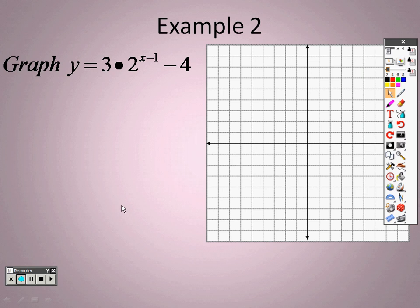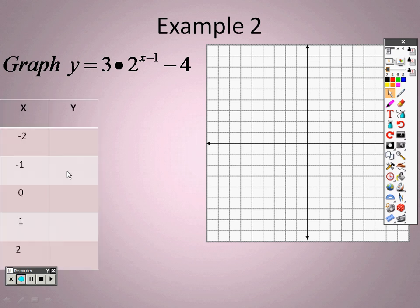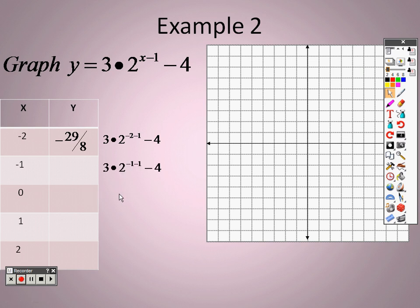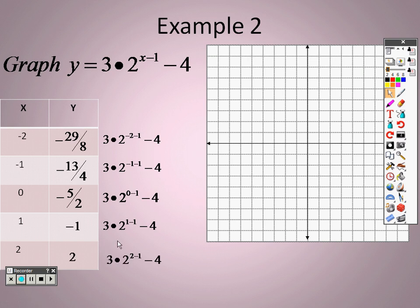When you plug that in, press graph. You'll see it starts down here and then goes up. Go to second graph so we can see our table. You might be way up in the negatives, so press the down arrow until you get around negative 2. At negative 2, the value is negative 3.625, which is negative 29 over 8. At negative 1, I get negative 3.25, which is negative 13 over 4. At 0, I get negative 2.5, which is negative 5 over 2. At 1, I get negative 1. And at 2, I get 2.